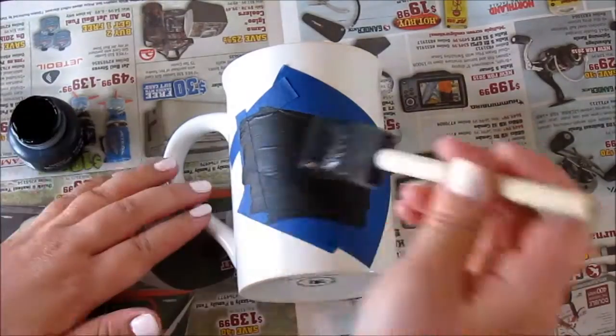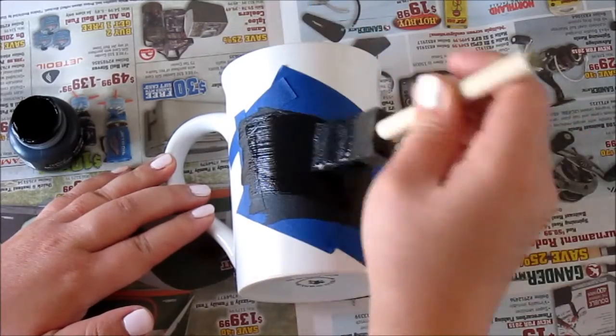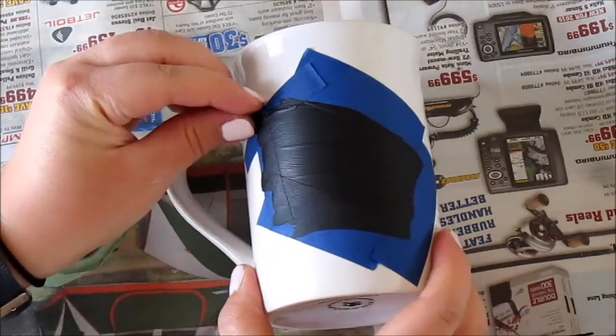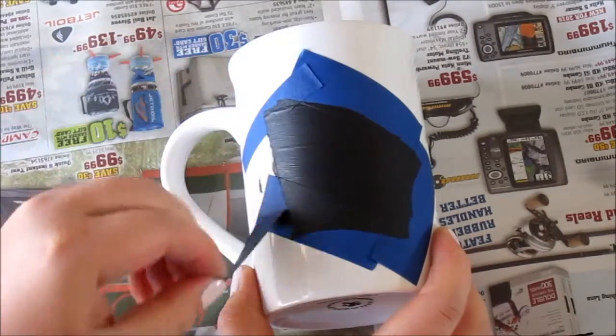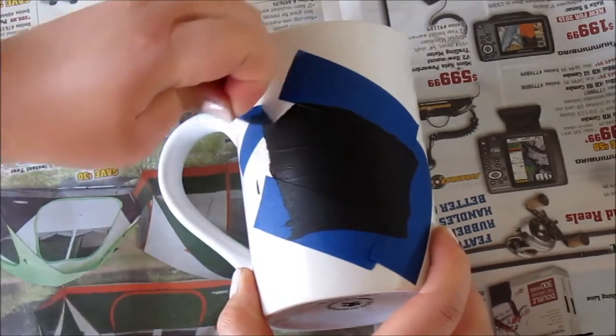Go ahead and add another layer of chalk paint. Give it 15 to 20 minutes to dry again. Once it's dried go ahead and take the masking tape off.